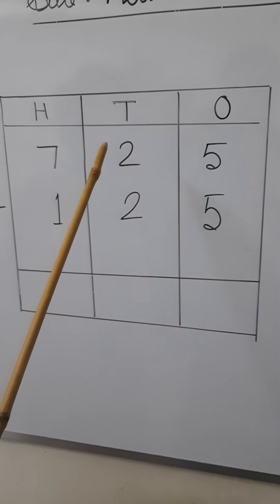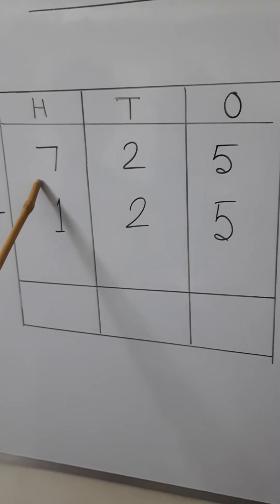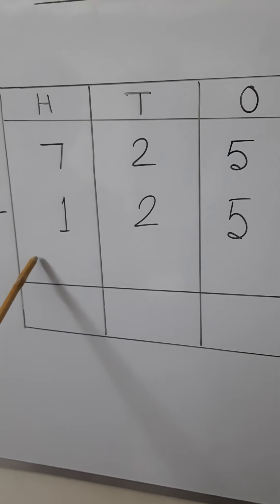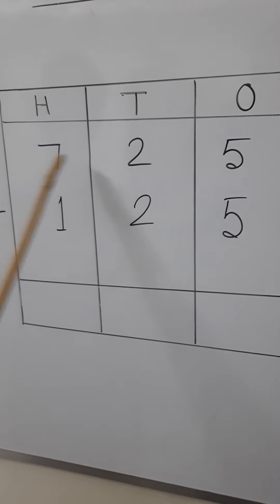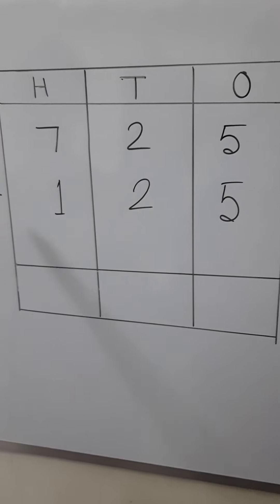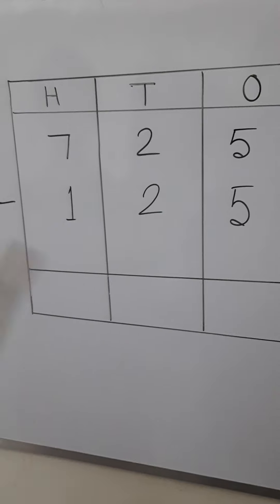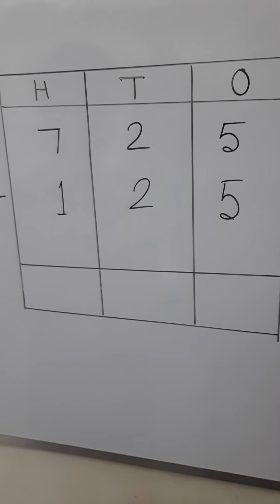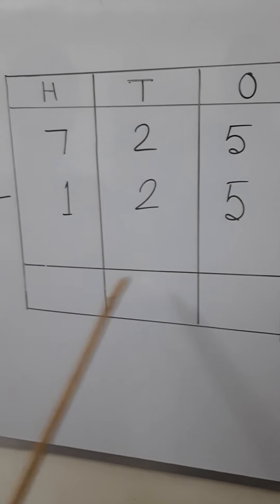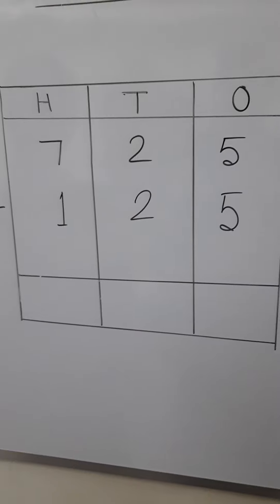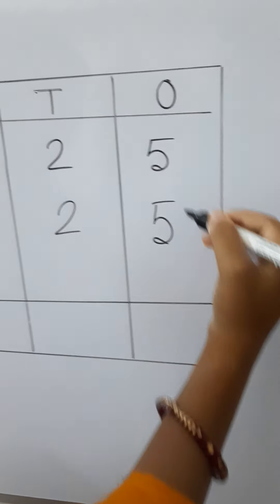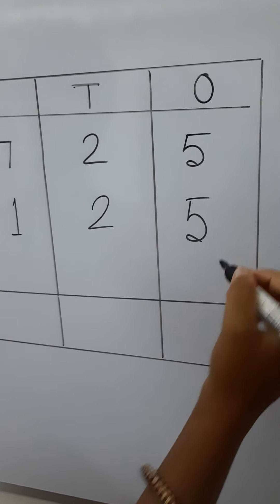So my dear students, first we will write the total number of people in the book fair, which is 725, and next the number of children in the book fair, which is 125. We have to subtract 125 from 725. The answer we get will be the number of adults in the book fair. Let's do the subtraction — first the ones place: 5 minus 5 equals 0.